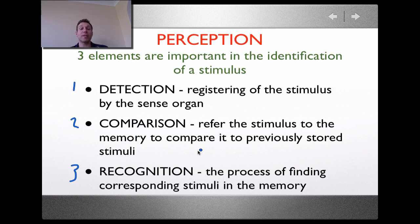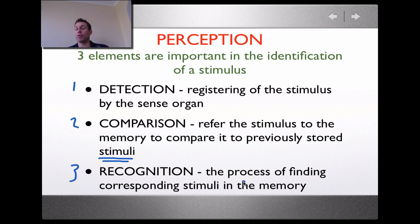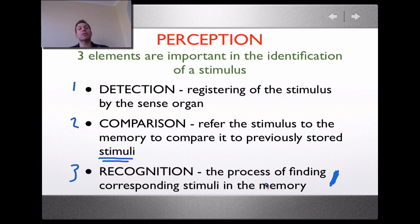We then compare that to anything else we have in memory — a previously stored stimulus. That previously stored stimuli means we have seen something like it before, if not the exact same thing, and we immediately compare that in our memory to those previously stored stimuli. Then we have recognition. Recognition is key because you have to be able to find that corresponding stimuli in your memory. If you can't recognise it from before, you won't know what's going on and won't be able to select the appropriate skill to optimise performance. Recognition can be trained — hence why we try and train in many different situations.